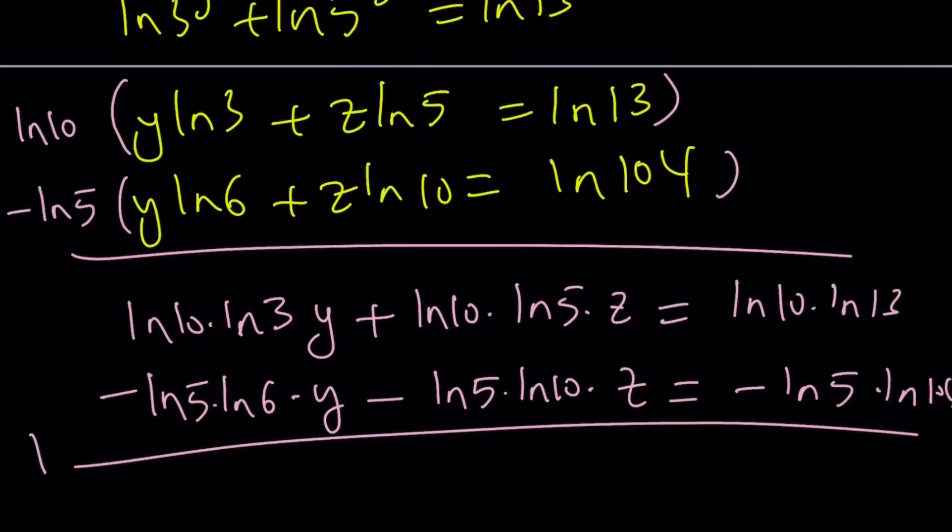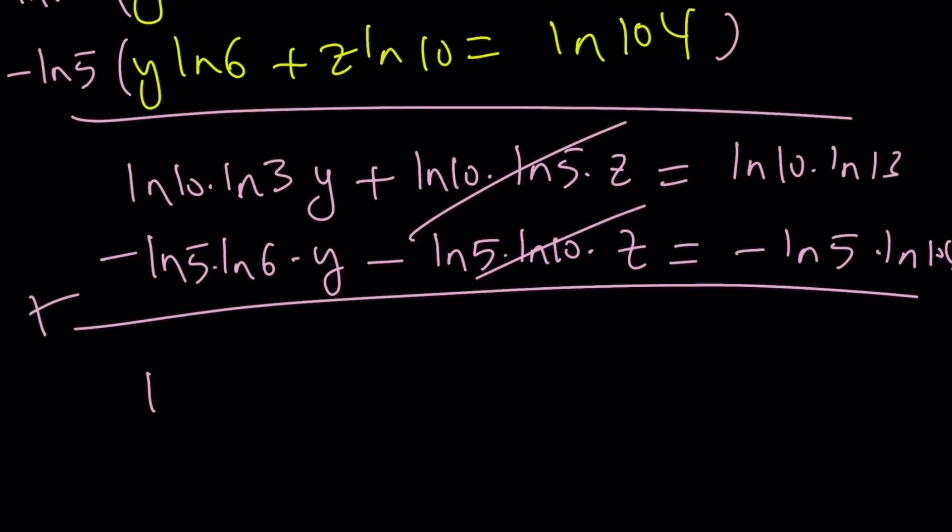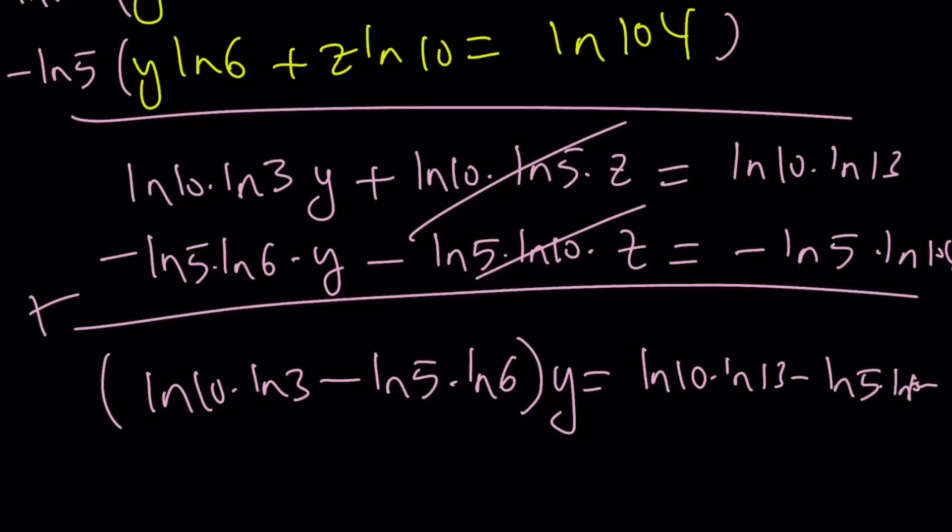Now, if you add these equations up, then you're going to get rid of the z values, and you're going to get ln 10 times ln 3 minus ln 5 times ln 6, multiply by y equals ln 10 times ln 13 minus ln 5 times ln 104. Okay. That's a lot of work.